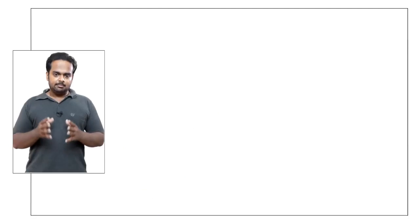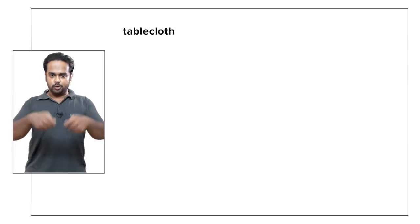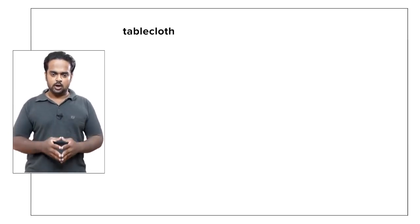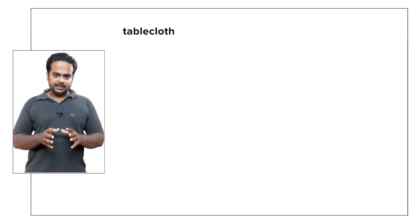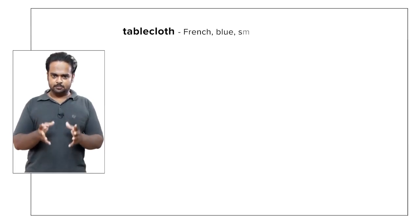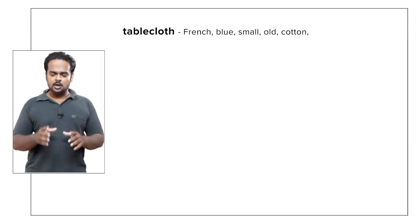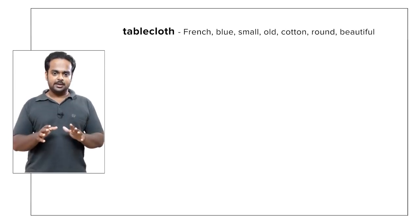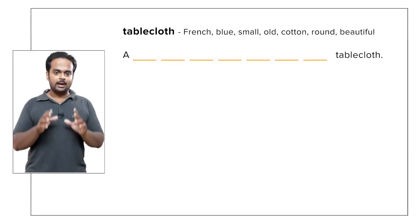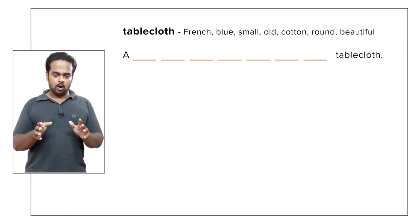Let's take an example. In my home I have a tablecloth — a cloth that you put on a table before you put any food on the table. This tablecloth is from France, it's blue in color, it's small, it's quite old, it's made from cotton, it's round in shape, and it's beautiful. Your job is to put all of these adjectives in the correct order before the noun 'tablecloth.' Pause the video if you want, think about the order, and then play the video and check.